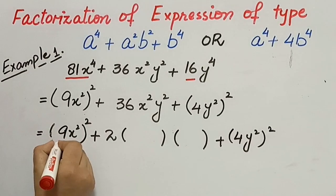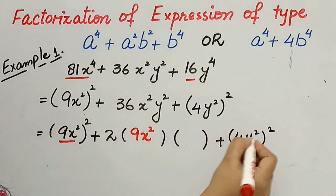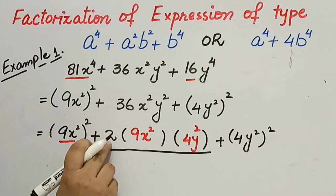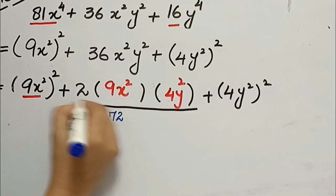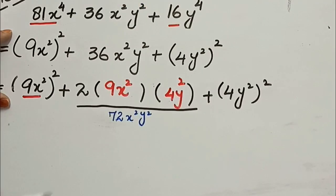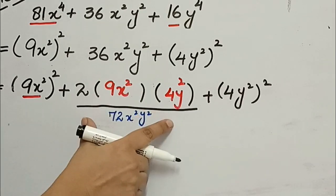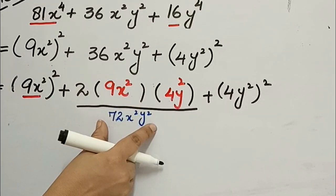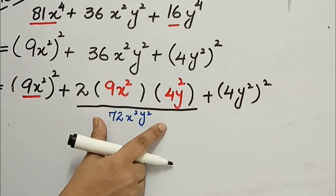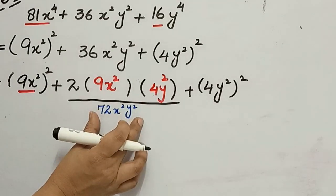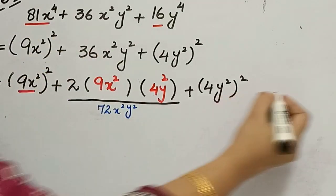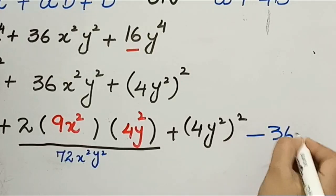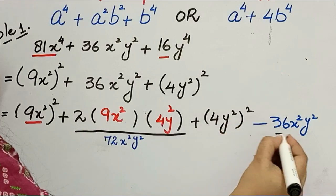Here 9x² is placed in the 'a' position and 4y² is placed in the 'b' position. So 2ab = 2 × 9x² × 4y² = 72x²y². But we only have 36x²y² in our expression. So 72 − 36 = 36, meaning the extra amount is 36x²y². We subtract this extra term: minus 36x²y².